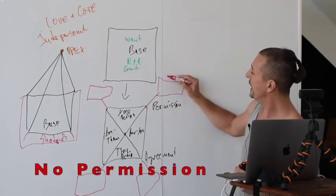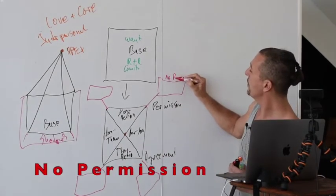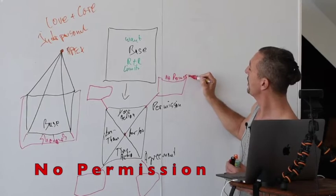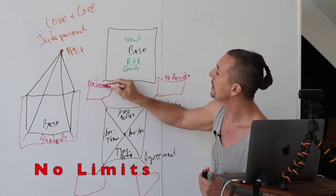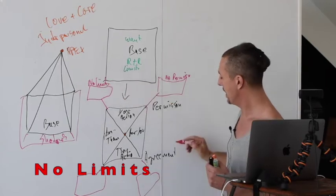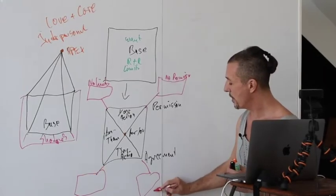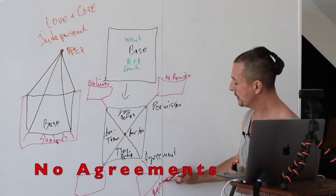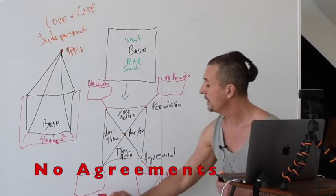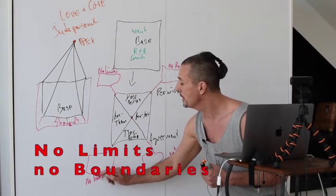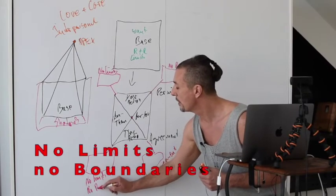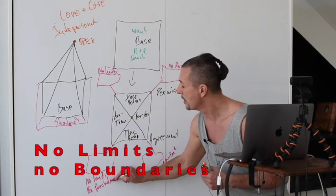You have the shadow strategies in the engagement system. Here are the shadows if you have no permission, here you have no limits, here you have no agreement, and here you have as well no limits or no boundaries.